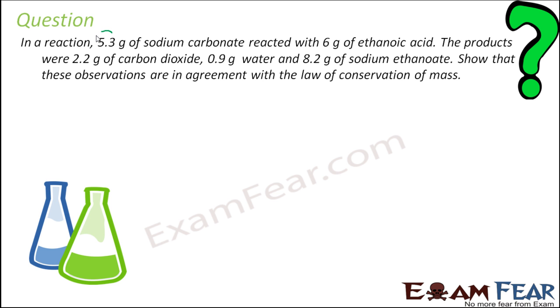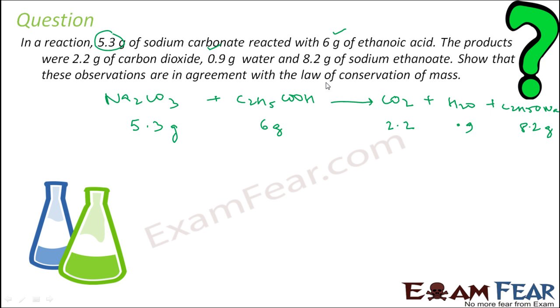So in the reaction, 5.3 gram of sodium carbonate Na2CO3, and this is 5.3 gram. React with 6 gram of ethanoic acid. Ethanoic acid is C2H5COOH. You study about these in the higher classes. 6 gram. And the product was 2.2 gram of carbon dioxide, the product was 2.2 gram of carbon dioxide. 0.9 gram of water. And 8.2 gram of sodium ethanoate C2H5ONa. 8.2 gram.